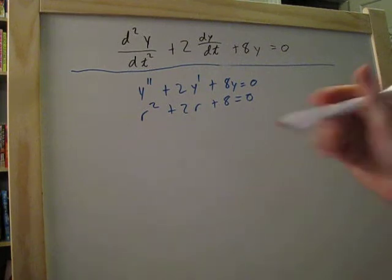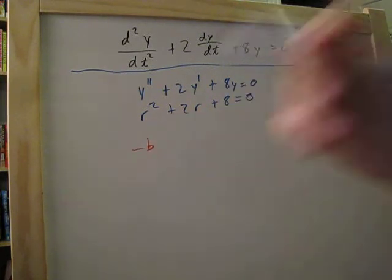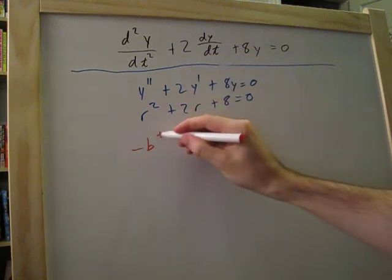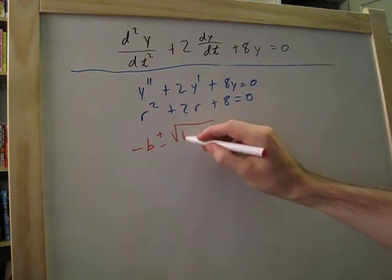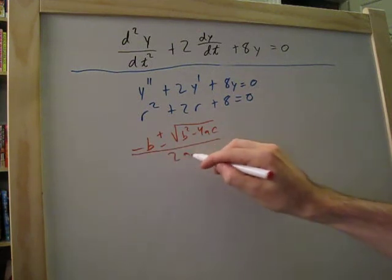In case you don't remember, I'm going to go ahead and post this. The quadratic formula is minus b plus or minus square root of b squared minus 4ac. And that's all over 2a.